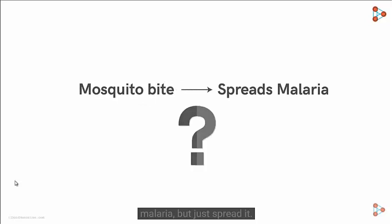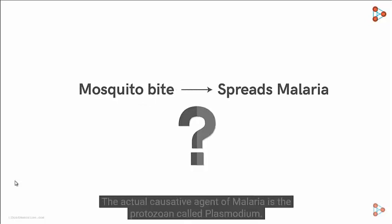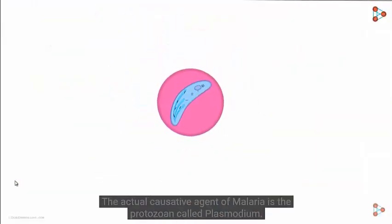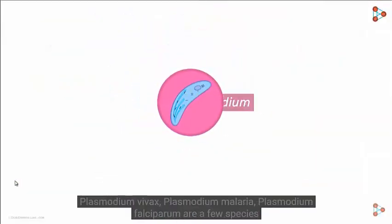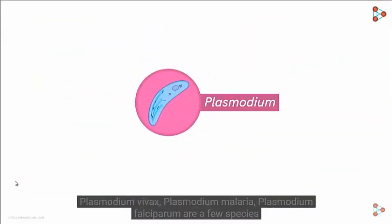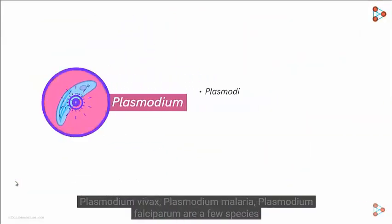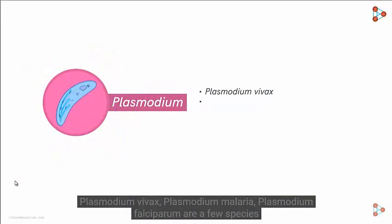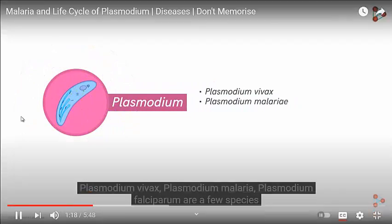The actual causative agent of malaria is the protozoan called plasmodium. The main species include Plasmodium vivax and Plasmodium malariae.